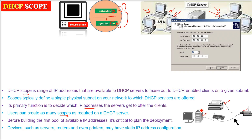A user can create as many scopes as required on a DHCP server. You can have 10 scopes or you can divide this range into 10 parts, 20 parts — it's up to you.